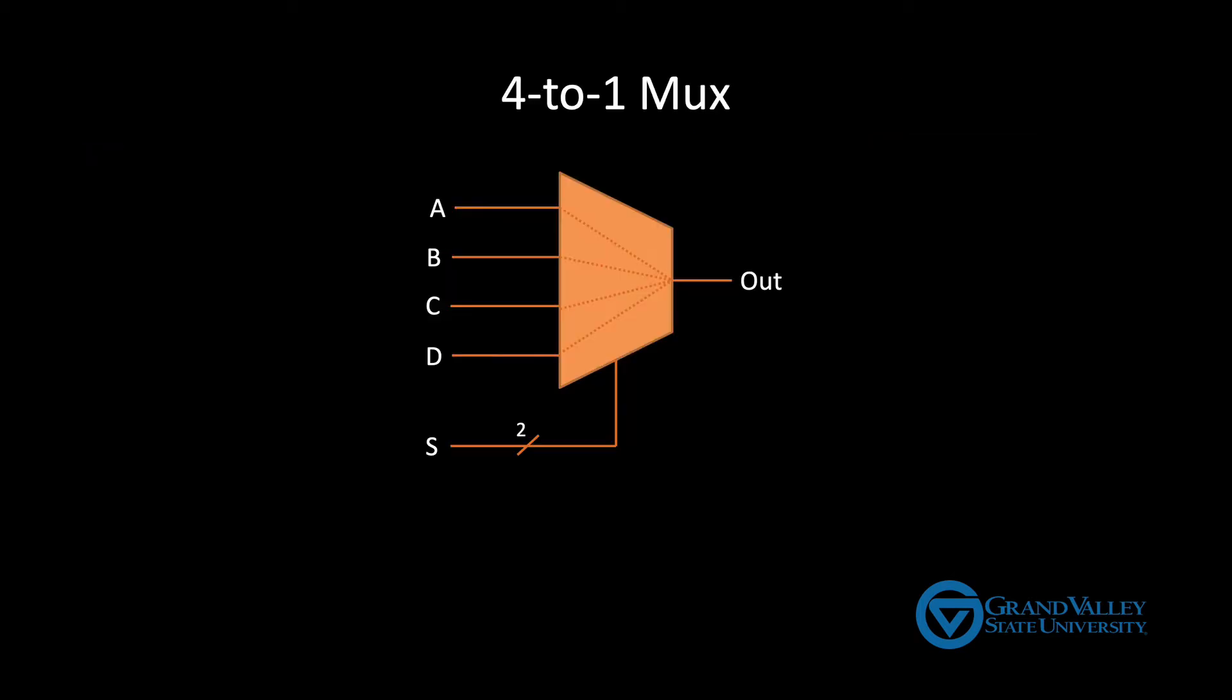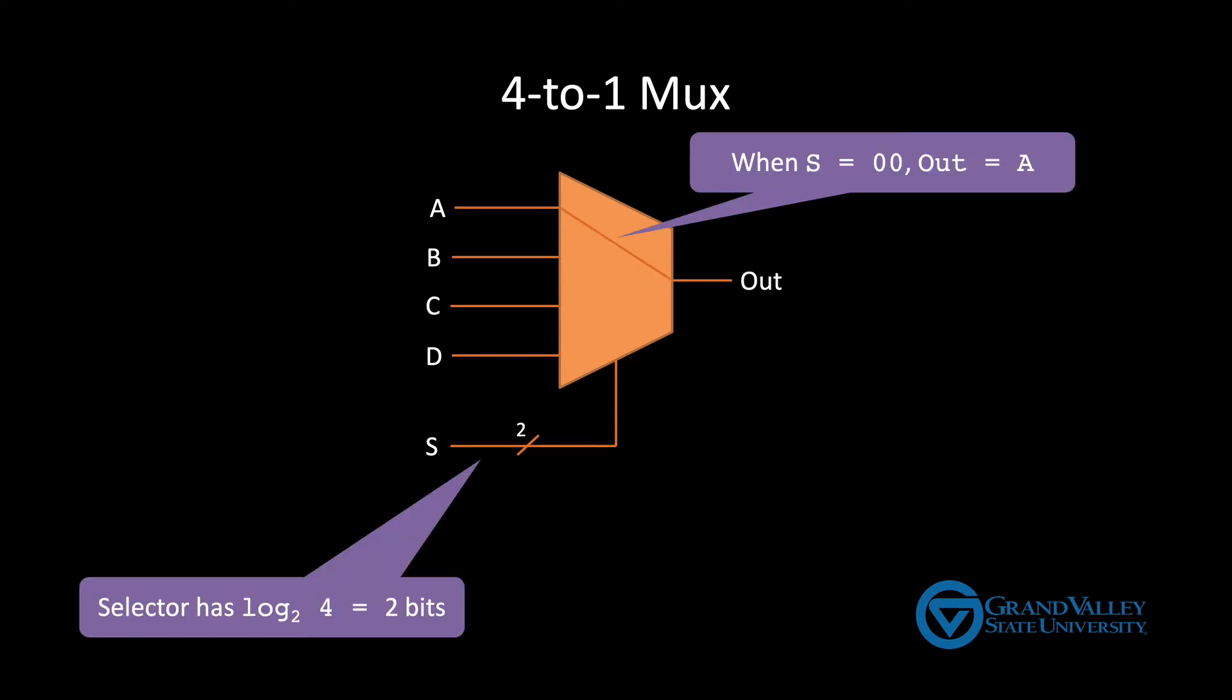So now, let's consider a 4 to 1 MUX. A 4 to 1 MUX selects 1 of 4 inputs to place on the output. Notice that because we need to distinguish among 4 inputs, the selector now has 2 bits. When S is 0, 0, the output is equal to A. When S is 0, 1, the output is equal to B.